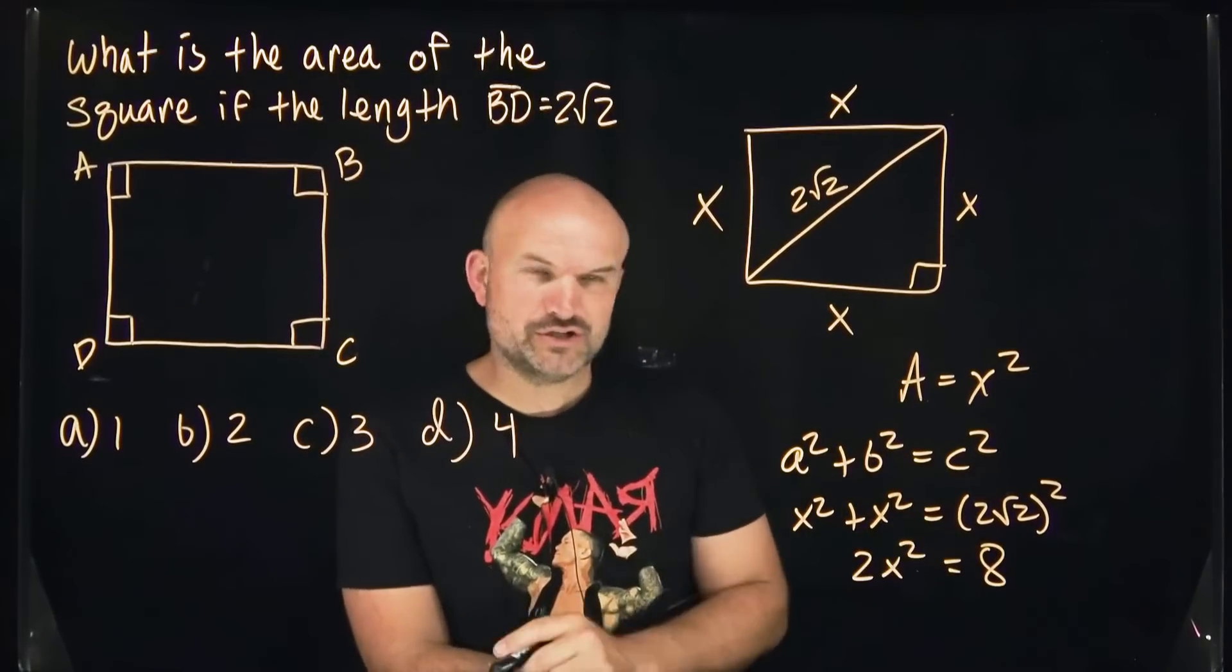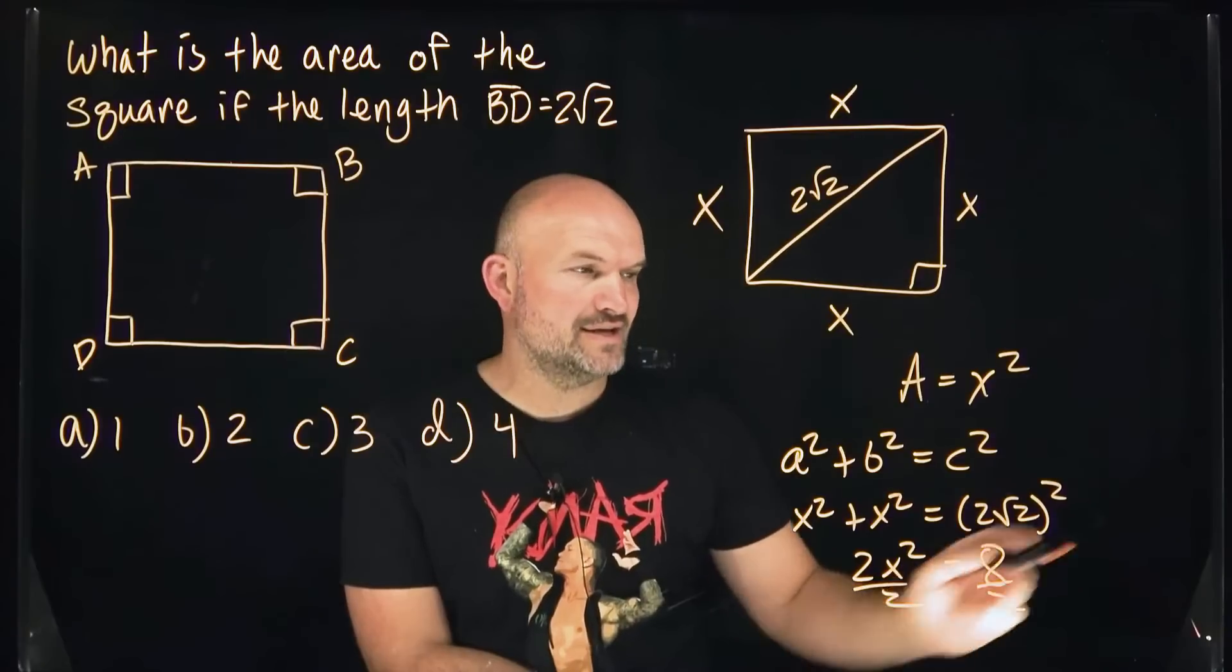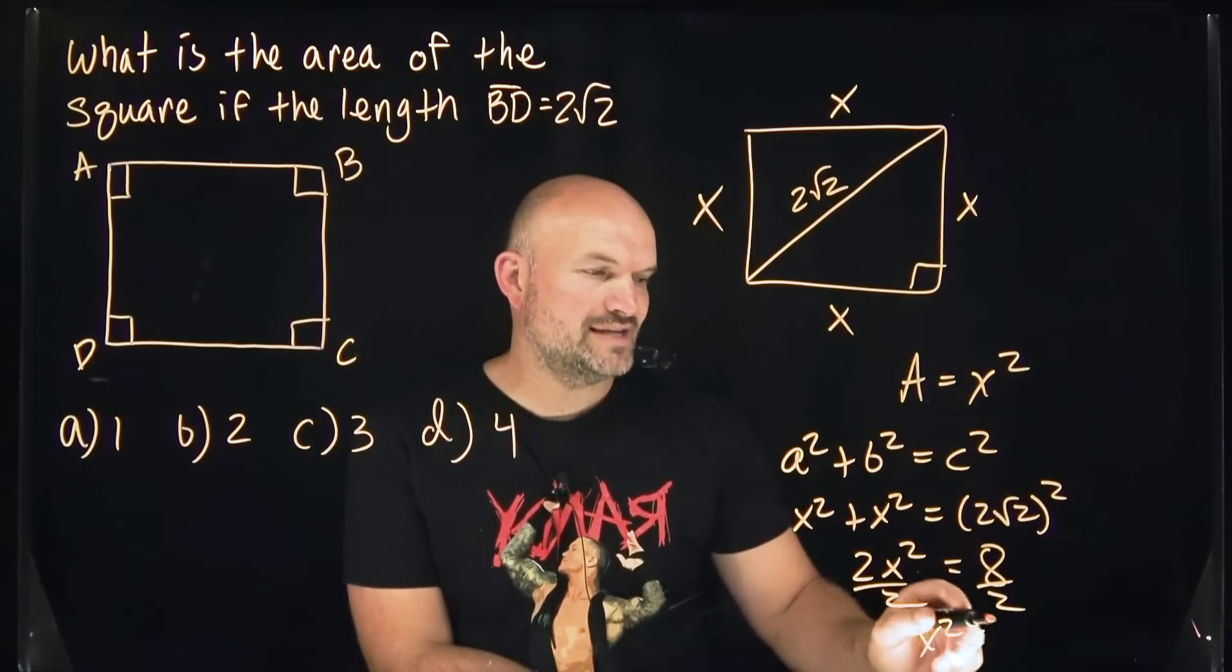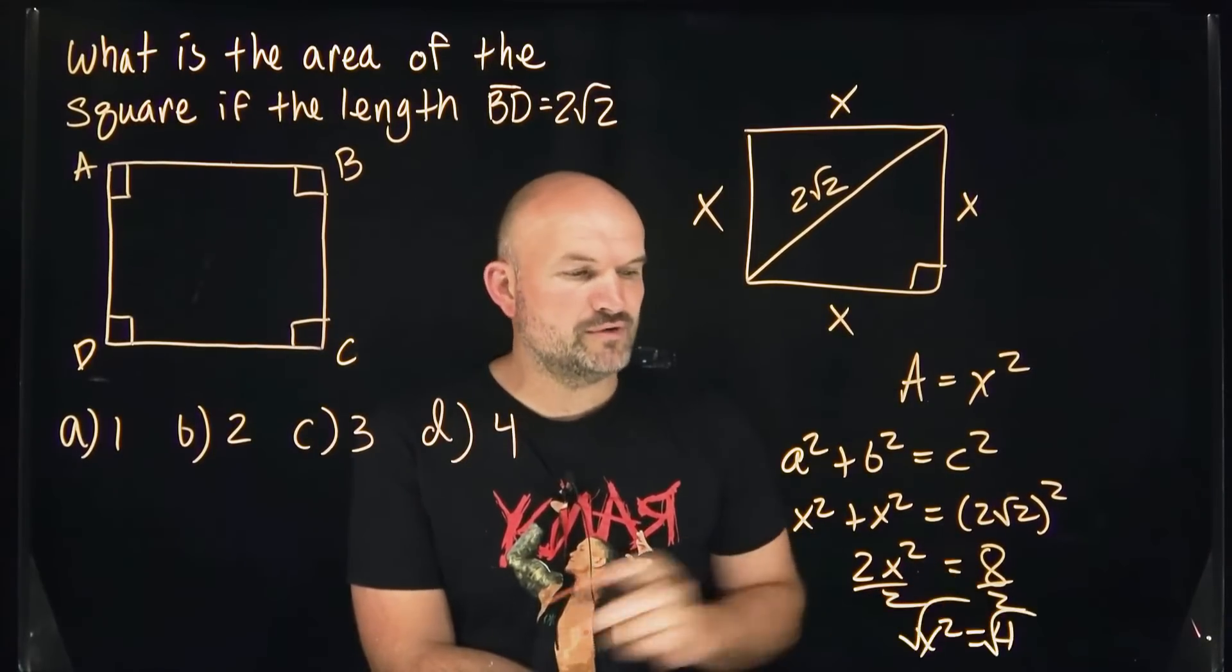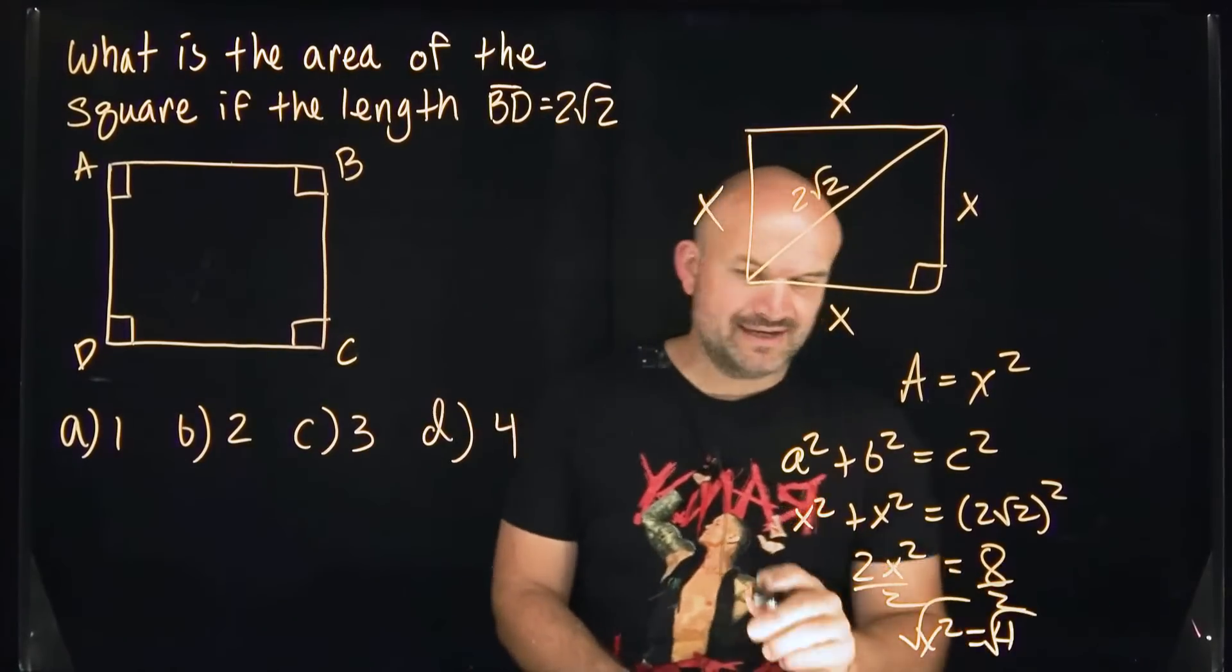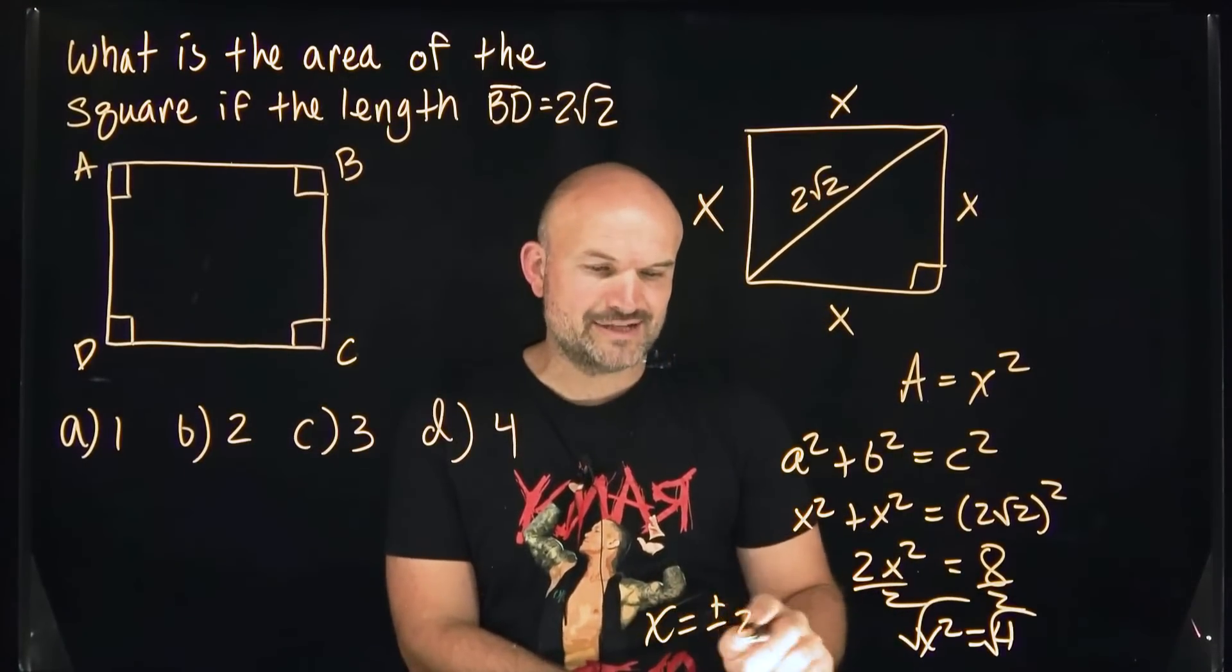Now, all I simply need to do is go ahead and solve, so I can divide by 2 on both sides, and therefore I get x squared is equal to 4, take the square root of both sides, and what you're going to get is x is going to equal plus or minus 2.